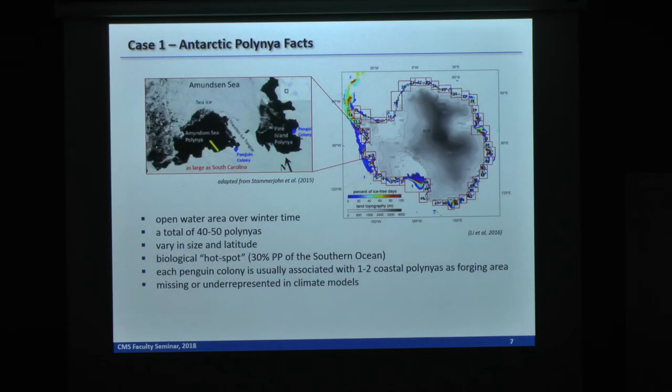The first one is about Antarctic polynya. Before that, I would like to give several facts about the polynya. This is a visible image from satellite, which you can see there's a clear sea ice cover in white, and the black color is a hole in the middle of the sea ice. Those are called the polynya because they remain open water area over the wintertime, even in the polar region.